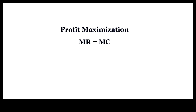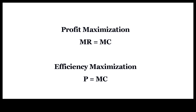Profit is maximized when marginal revenue from selling the product is equal to marginal cost of producing it. Economic efficiency, on the other hand, is maximized when price from selling the product is equal to marginal cost of producing it.